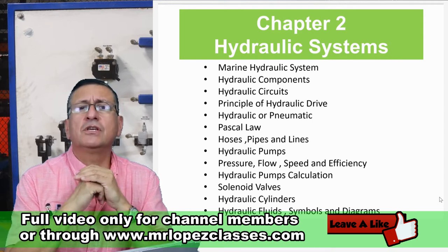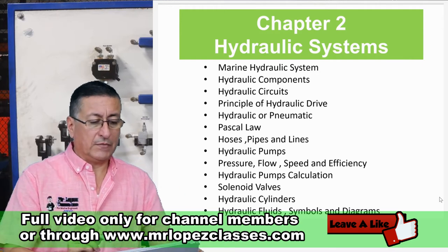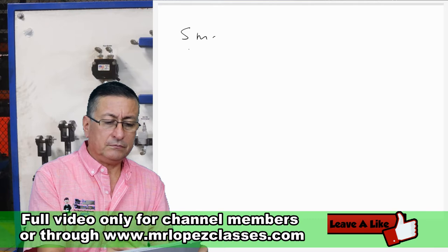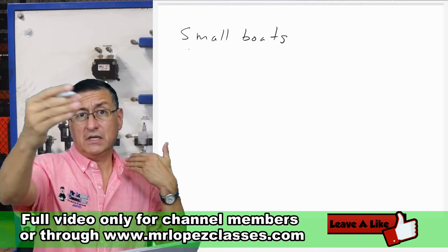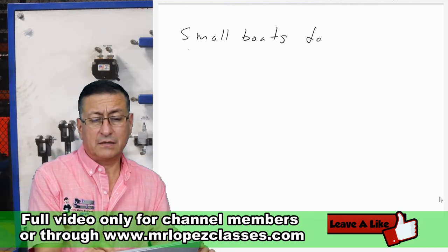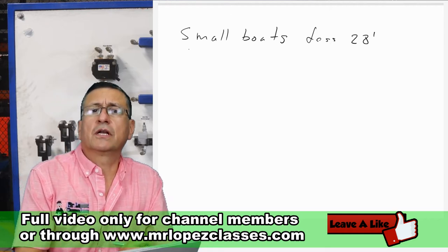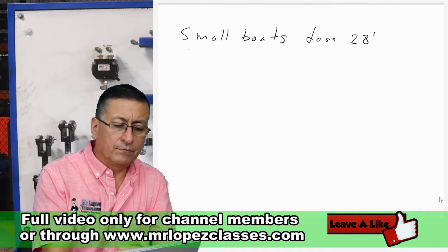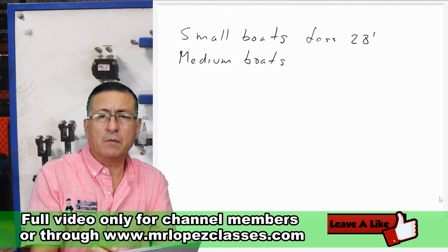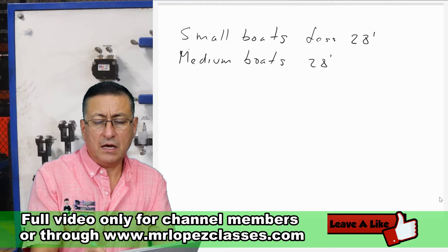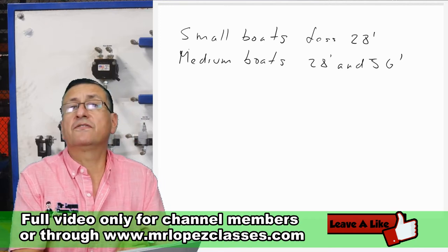But for me, I consider small boats with a total length less than 28 feet. Those are considered small boats. Medium boats are boats in between 28 feet and 56 feet length.